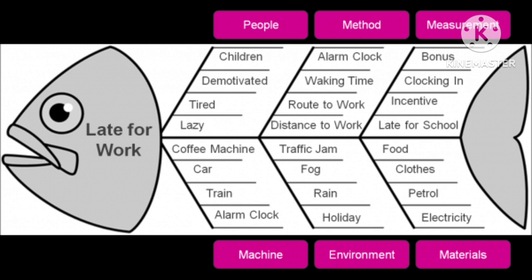The causes can be identified with the help of a fishbone analysis diagram. These are the factors which can affect the timing of an individual for office. Number one — People: children or people at home, feeling demotivated to come to office, feeling lazy, or feeling tired and sleepy.